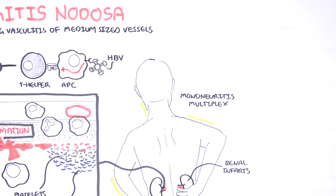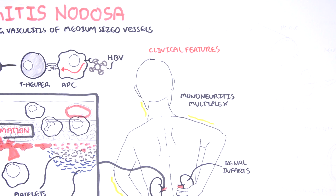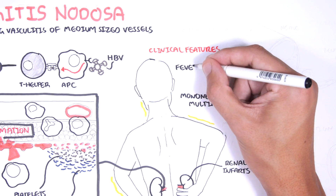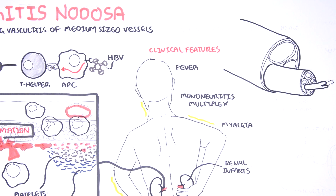The association with hepatitis B virus exists because patients with hepatitis B can often present with polyarteritis nodosa. Clinical features of polyarteritis nodosa include nonspecific symptoms such as fevers, myalgia, weight loss, and a rash. Nervous system involvement is common, with peripheral neuropathy and mononeuritis multiplex being the most common.